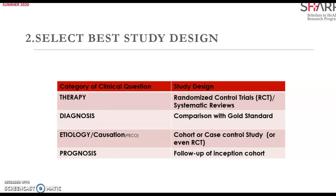We should then determine the category of the clinical question. There are four main ones: therapy, diagnosis, etiology, and prognosis.